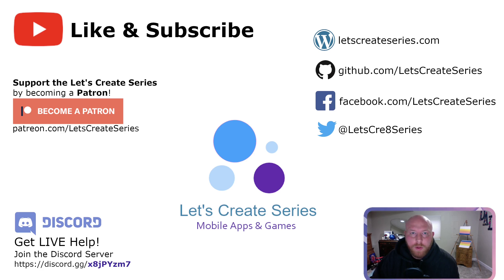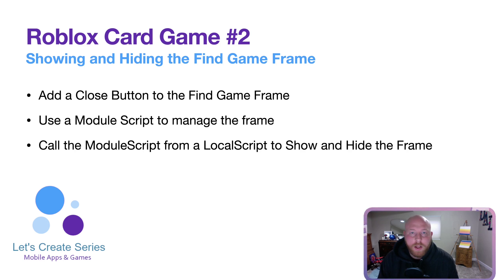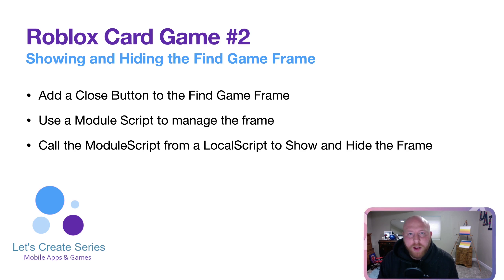What's up creators? Patrick here with the Let's Create series. Welcome back to our Roblox tutorial where we work on a card game. Today we're going to work on showing and hiding the find game frame. We're going to add the left and right frames — the left one for scrolling through available games and the right one for creating a game. We're going to use a module script that will handle and manage the frame, call it from the local script, connect to the find game button, and tie it all together with the close frame button.